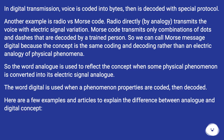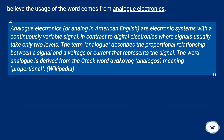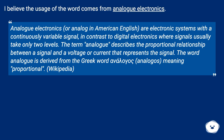The word digital is used when a phenomenon's properties are coded and then decoded. A second answer suggests the usage comes from analog electronics — electronic systems with a continuously variable signal, in contrast to digital electronics where signals usually take only two levels. The term analog describes the proportional relationship between a signal and a voltage or current that represents it. The word analog is derived from the Greek word analogos, meaning proportional.